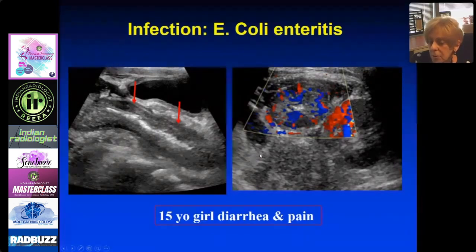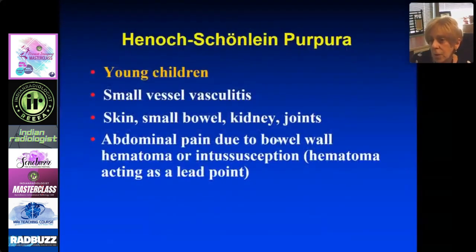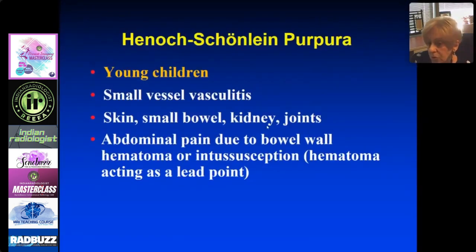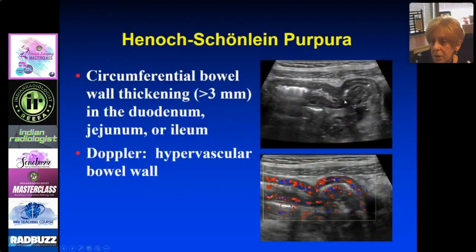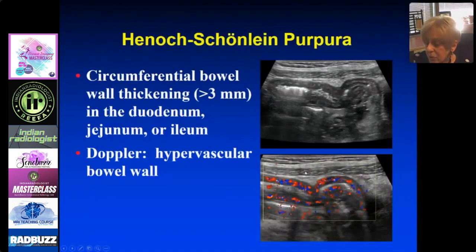Henoch-Schönlein purpura affects young children in the first decade. It's a small vessel vasculitis affecting the skin — they get a rash — as well as the small bowel, kidney, and joints. It can cause extreme abdominal pain due to a hematoma or intussusception, or simply because the vasculitis has involved the bowel wall. You get thickened bowel that looks like the other cases, involving the duodenum, jejunum, or ileum — it's very vascular. The clue is that it's a younger patient, so think about Henoch-Schönlein purpura and look for the rash.